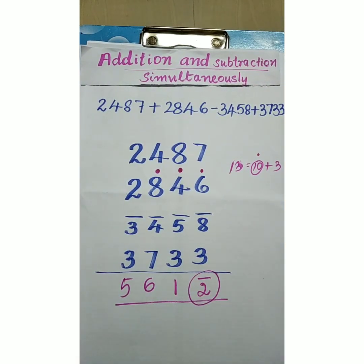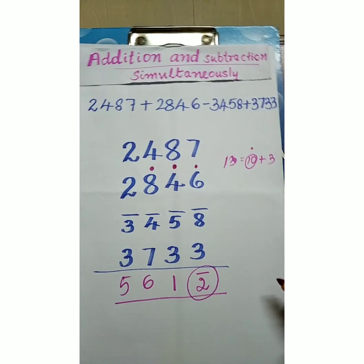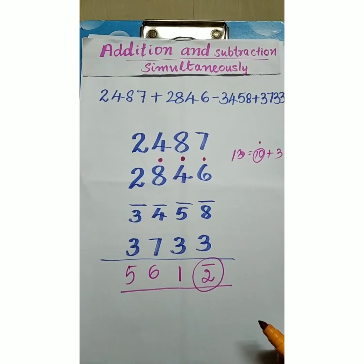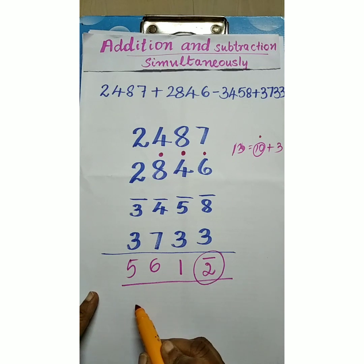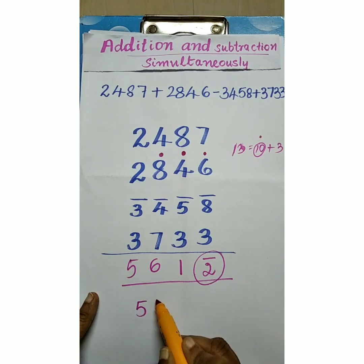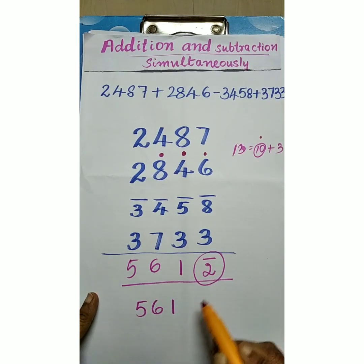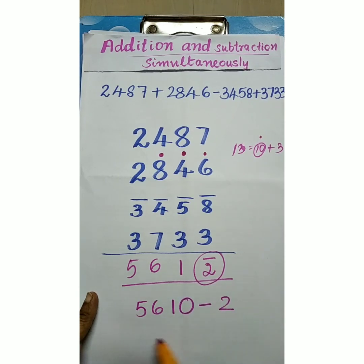And here 1 negative digit. That is minus 2. We have to convert into positive form. That already you learned. 5 6 1. This place is 0. Minus 2. So the result is 5 6 0 8.